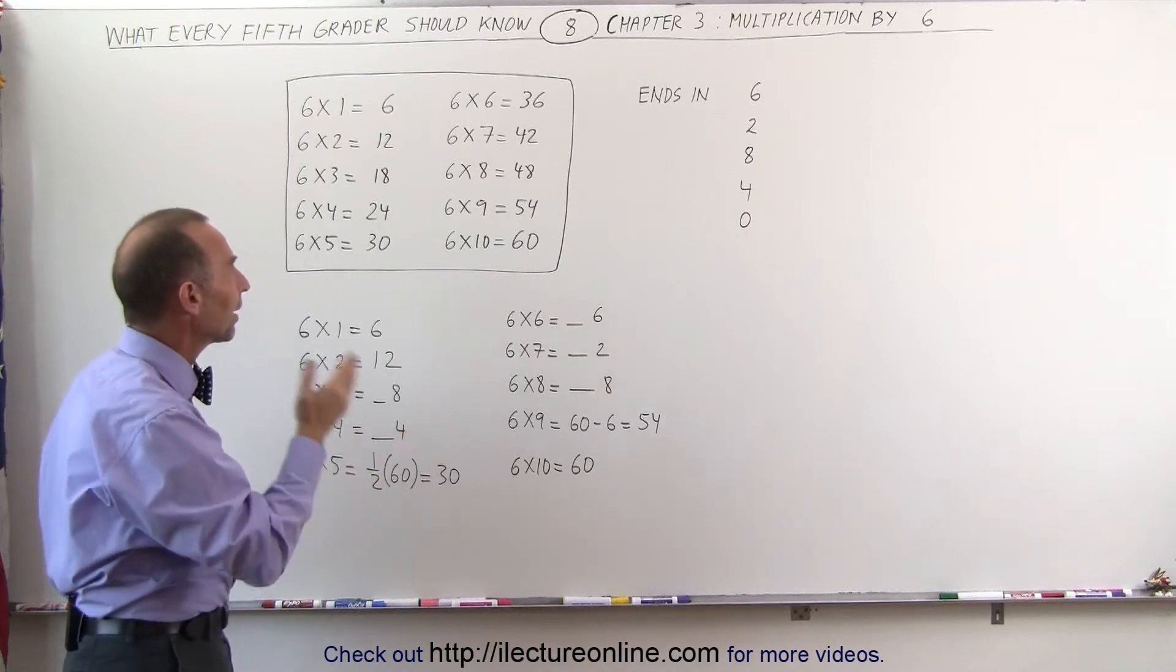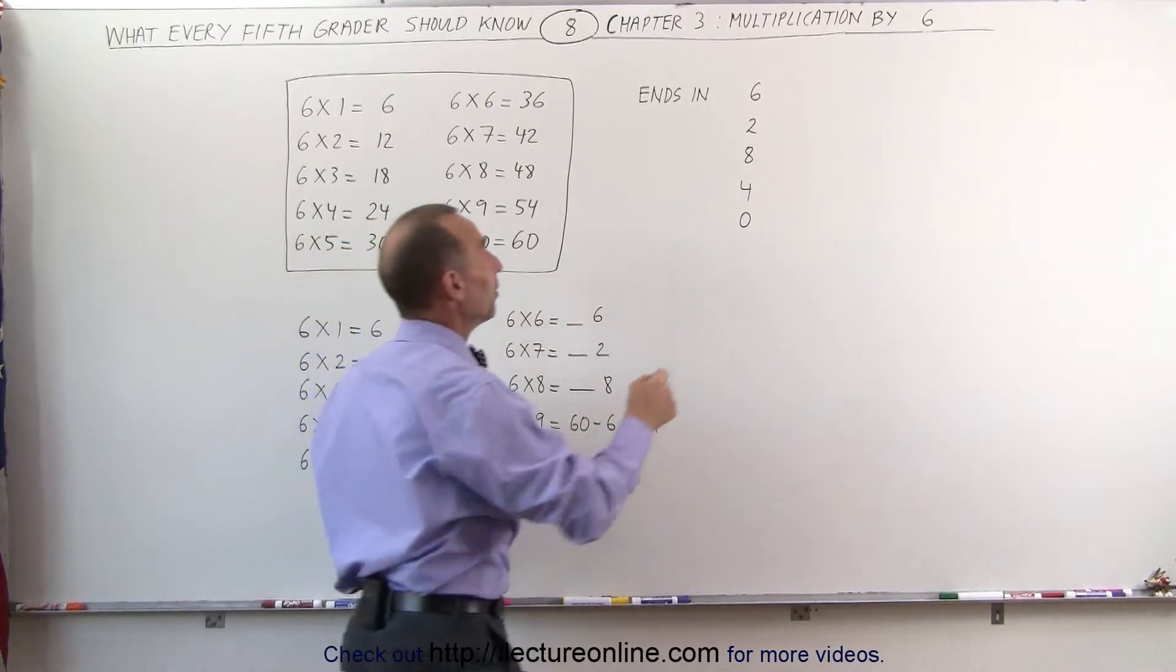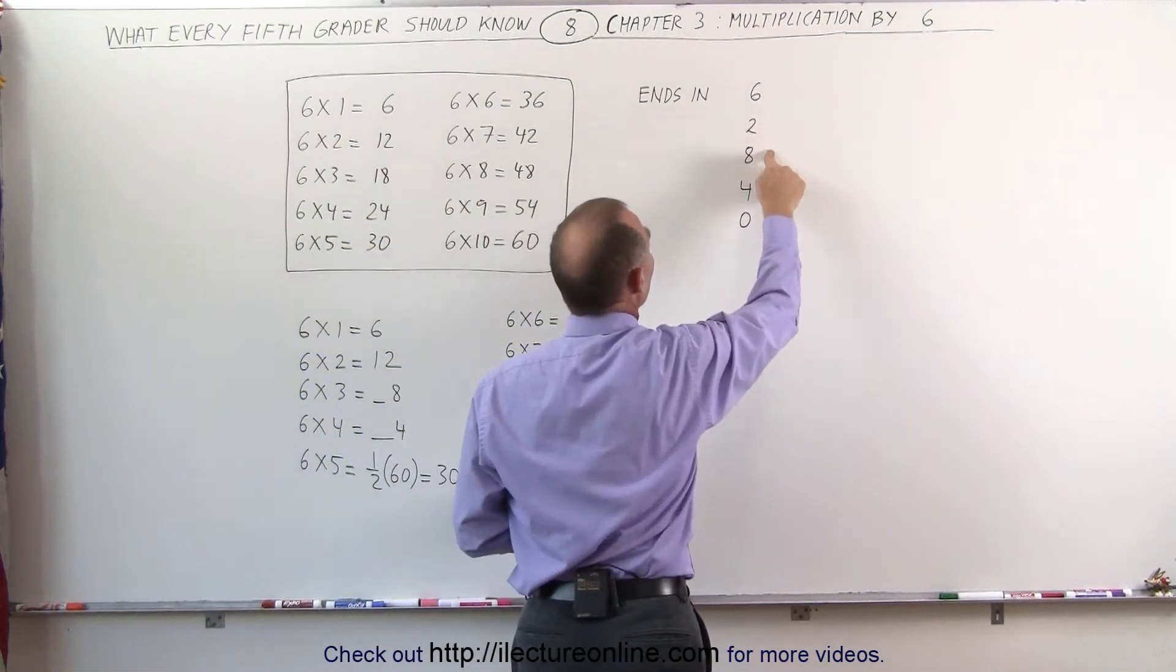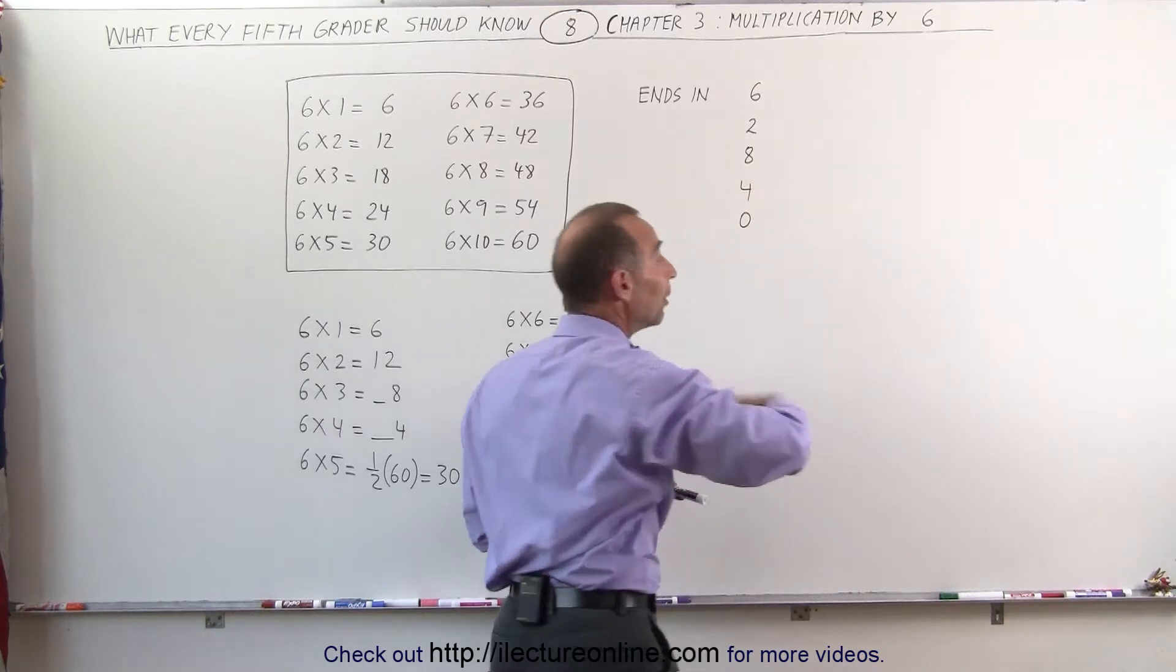So you recognize when we multiply times 6, the numbers always end up in a 6, a 2, an 8, a 4, or a 0. And they're all even.